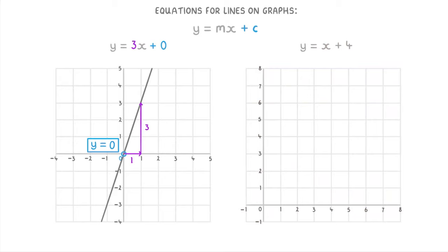For the other one, if there's no number in front of the x, then it's effectively 1x, so the gradient is 1. And the plus 4 tells us that it intercepts the y-axis at positive 4.